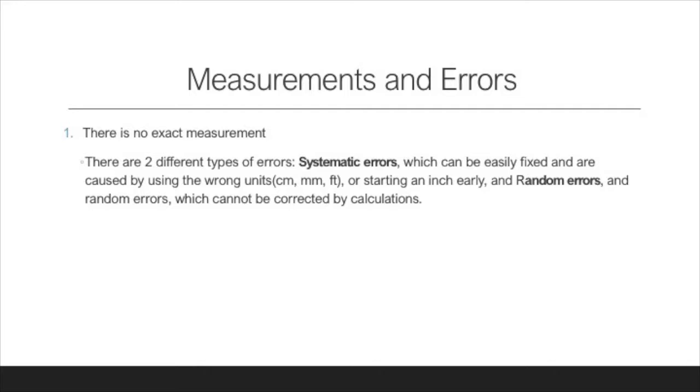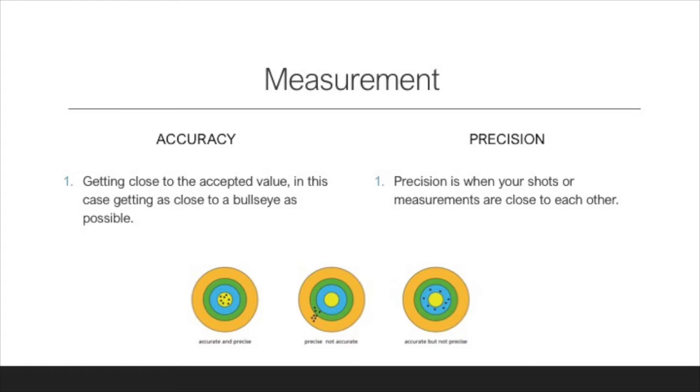There is no perfectly accurate measurement. There are two types of errors. Systematic errors can easily be fixed and are caused by using the wrong units—centimeters, millimeters, or feet—or starting an inch early. There are also random errors, which cannot be corrected by calculations.